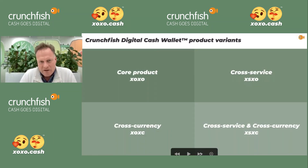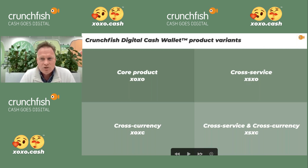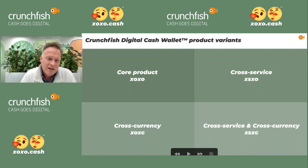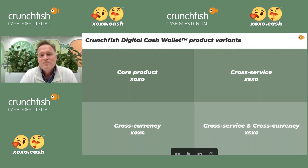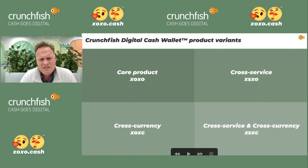We've set up several variants. At the bottom right corner we have cross-service and cross-currency, abbreviated XSXC. You can also think of cross-service with the same currency, or cross-currency within one service. Our core product — we had fun when we saw XOXO.